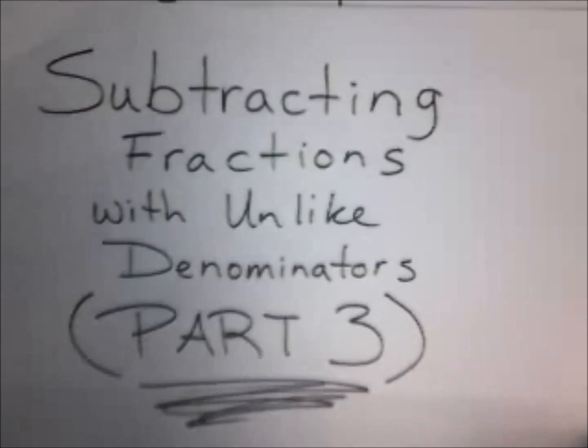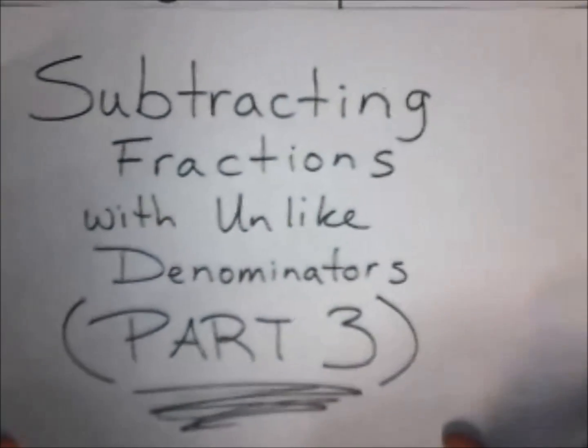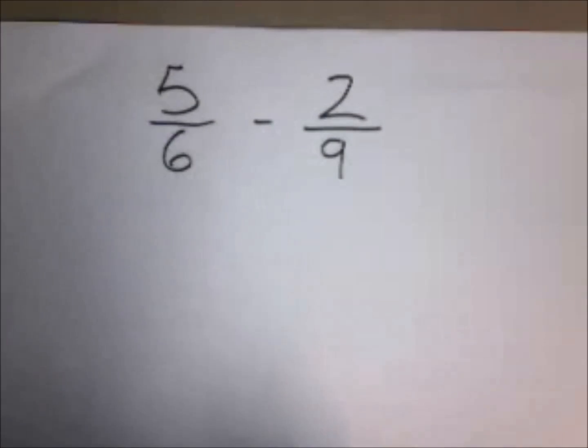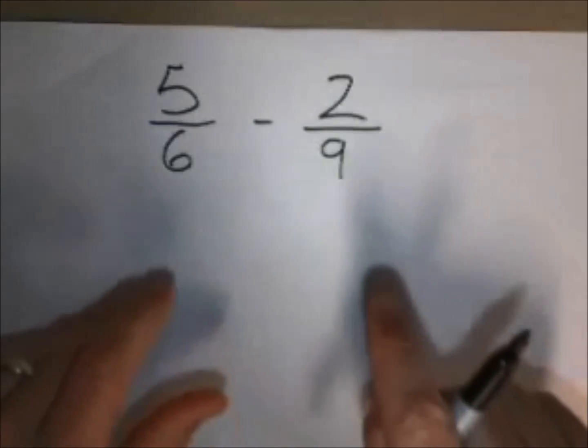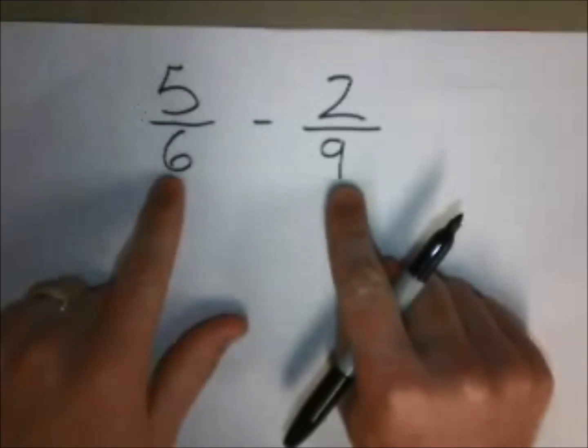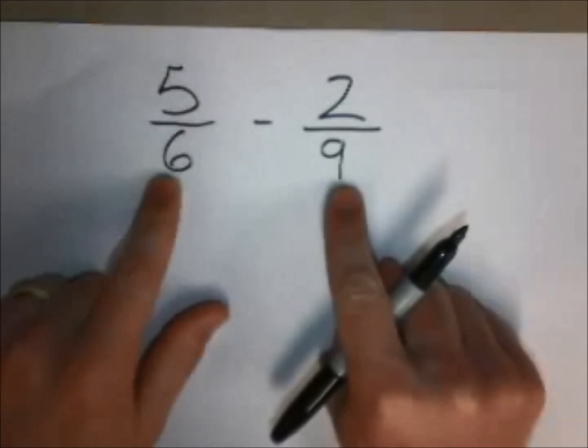Part three of subtracting fractions with unlike denominators. We are going to take a look at 5/6 take away 2/9. Now if you watched part two, many of you think, oh yeah, we can do crisscross multiplication. I can multiply this side by 9 and this side by 6. Well, you can, but there is an easier way.